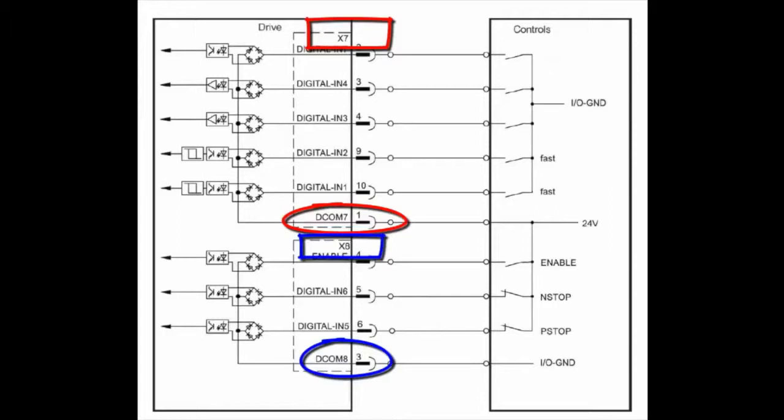X7 can be wired opposite of X8, meaning that if X7 is sourcing, then X8 can be sinking.